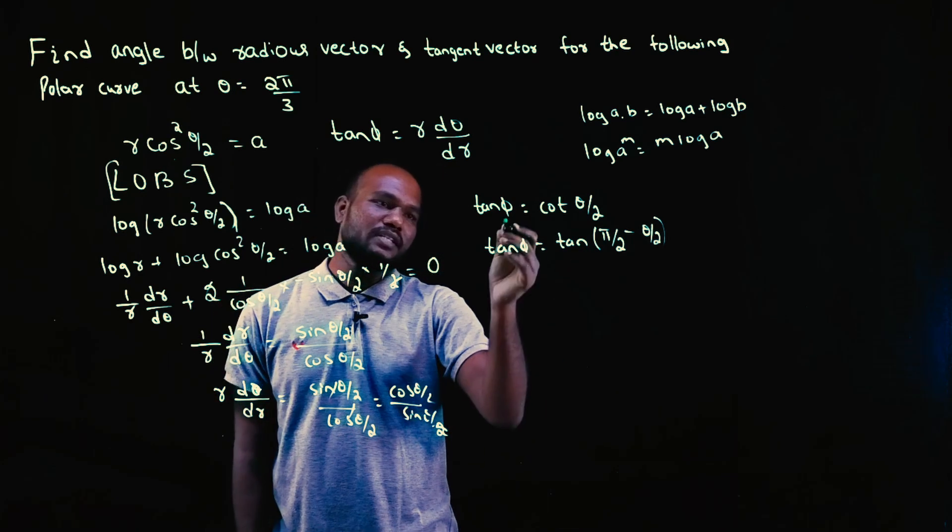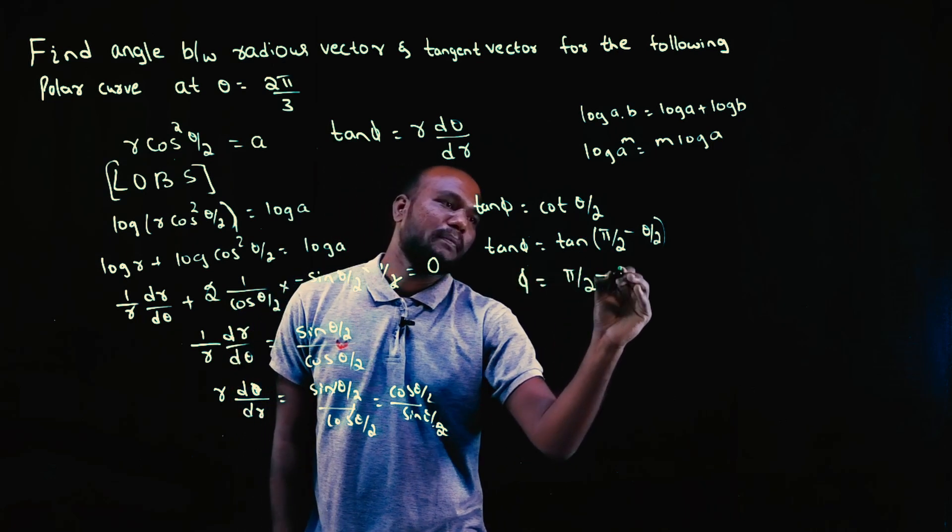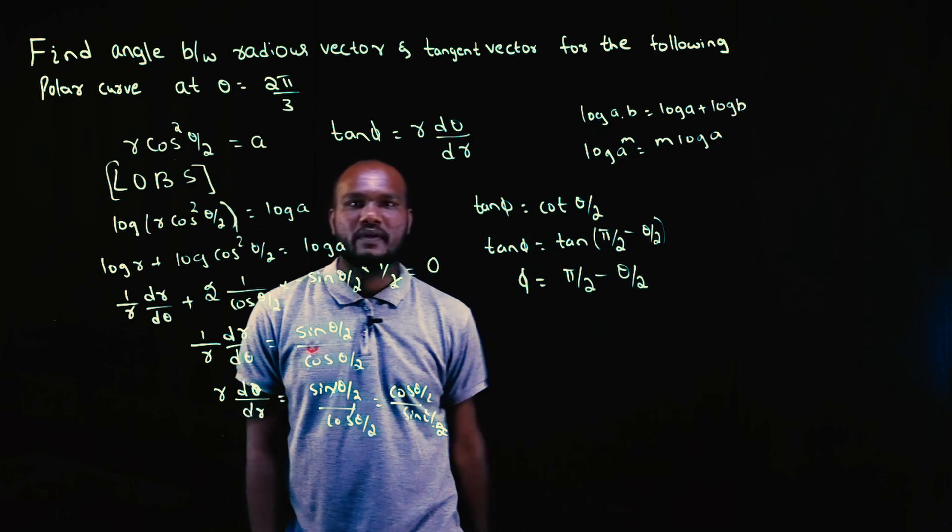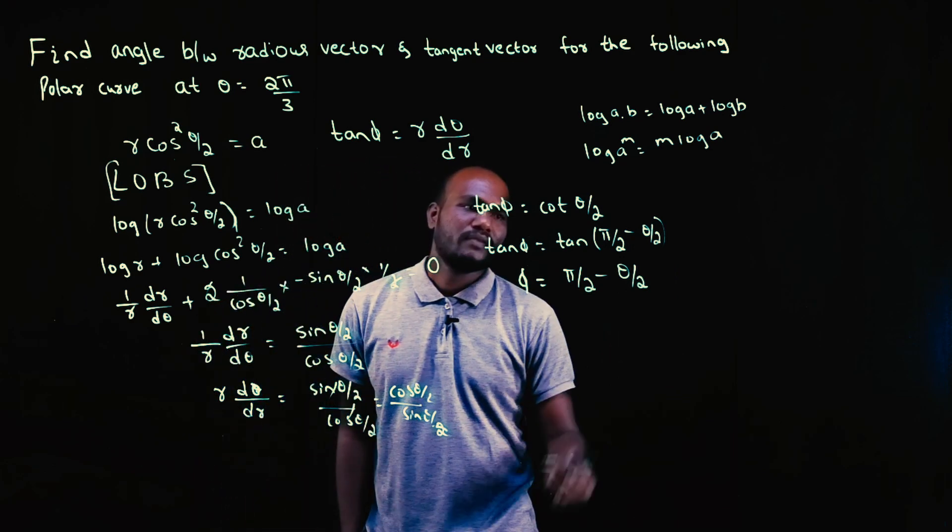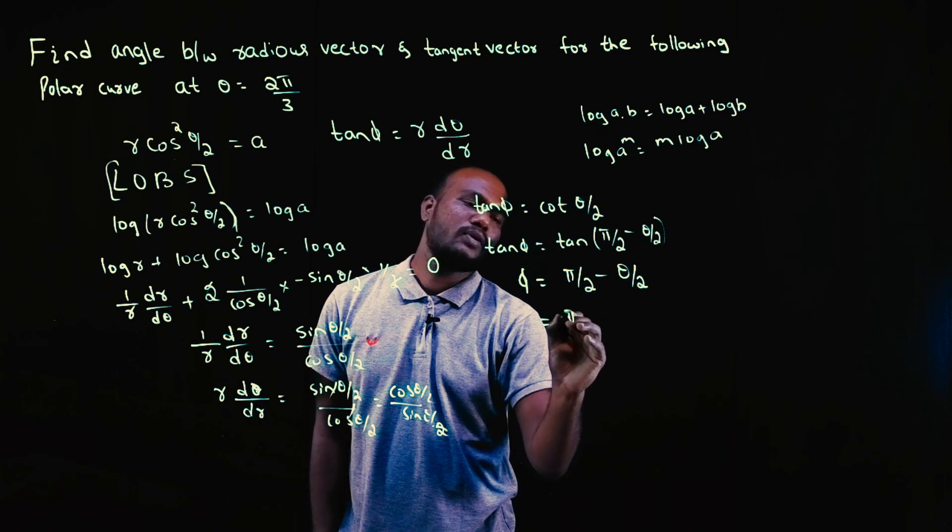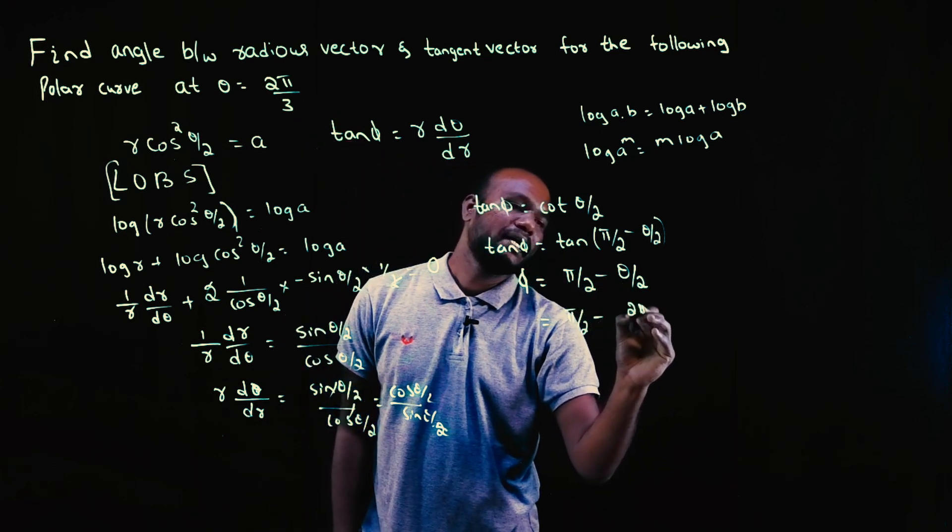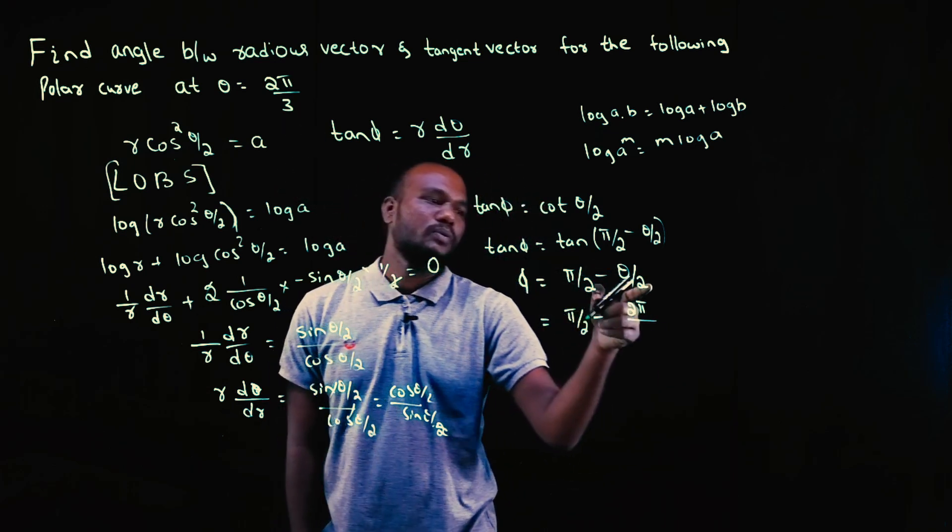So tan and tan is in first quadrant. So we can take tan and tan out. So phi is equal to what? Pi over 2 minus theta by 2. Right? So now we have the value of theta, that is 2 pi by 3. So let's just substitute here pi by 2 minus theta value is 2 pi by 3.